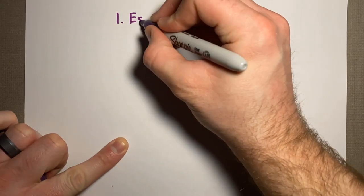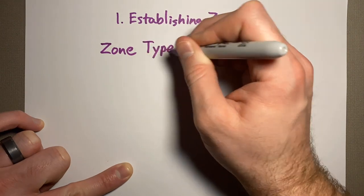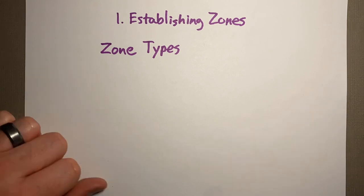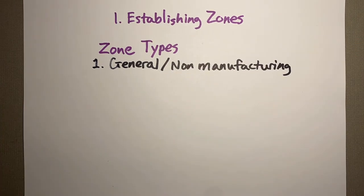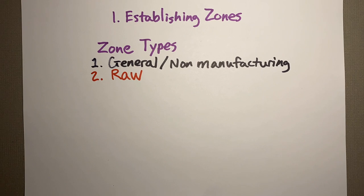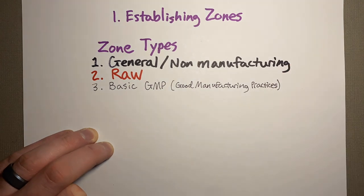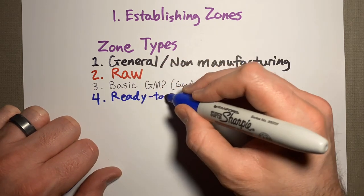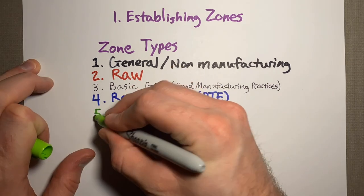When talking about establishing zones or zoning concepts, you wouldn't want to make cheese or butter in a dirty bathroom. These zones make sure the bathroom is far away from your production area. That would be a general or non-manufacturing area — bathrooms, offices. Then you have raw products, which are still food but unpasteurized and full of bacteria. Then basic GMP, which stands for Good Manufacturing Practices. Number four, ready-to-eat areas. And number five, the highest risk: high hygiene areas, which need to be super clean.